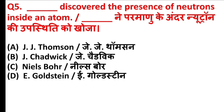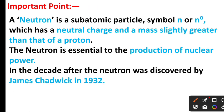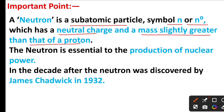Who discovered the presence of neutrons inside an atom? The answer is Option B, James Chadwick. A neutron is a subatomic particle, symbol N or N°, which has a neutral charge and a mass slightly greater than that of a proton. The neutron is essential to the production of nuclear power. The neutron was discovered by James Chadwick in 1932.